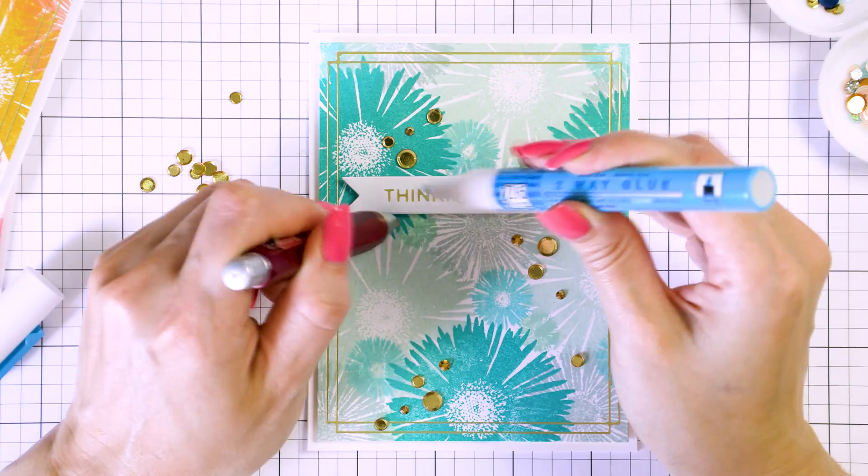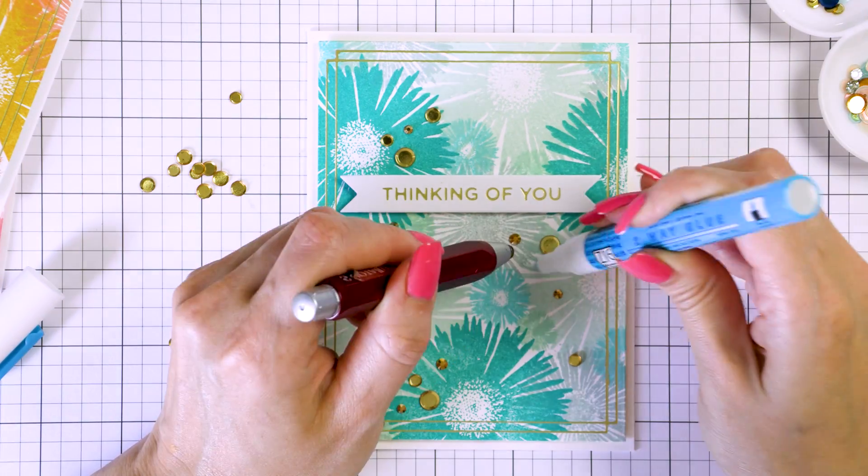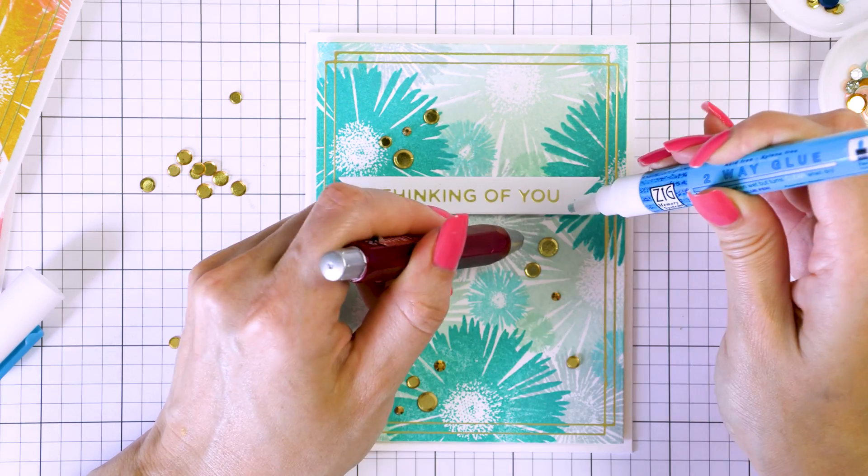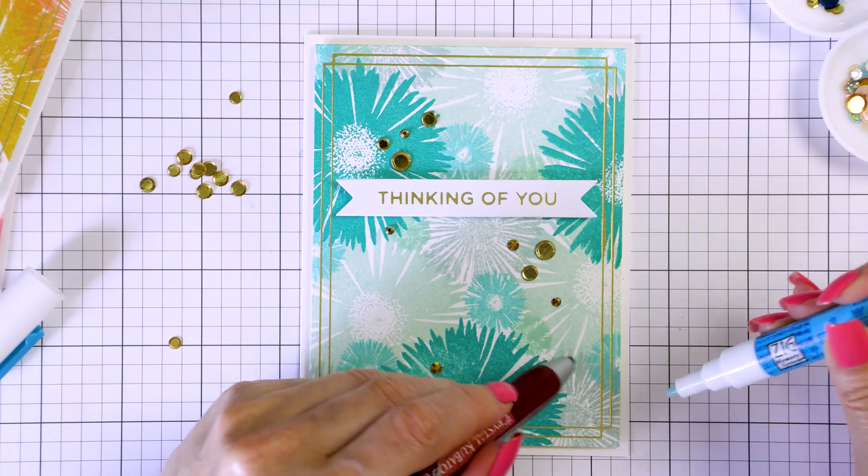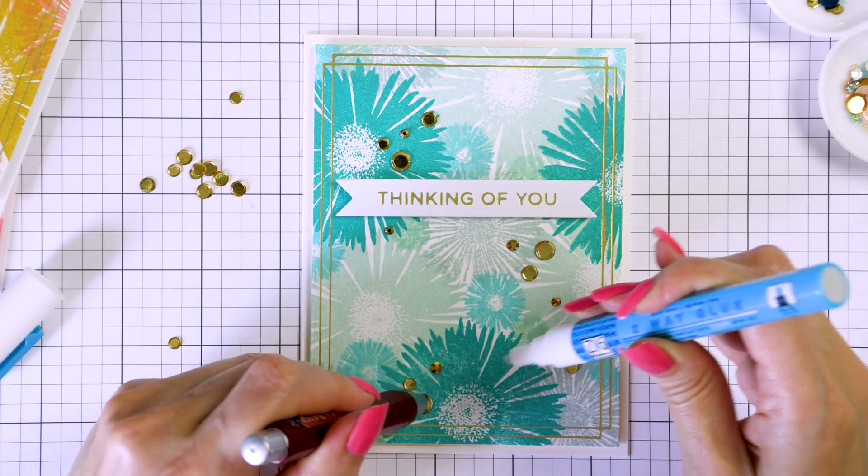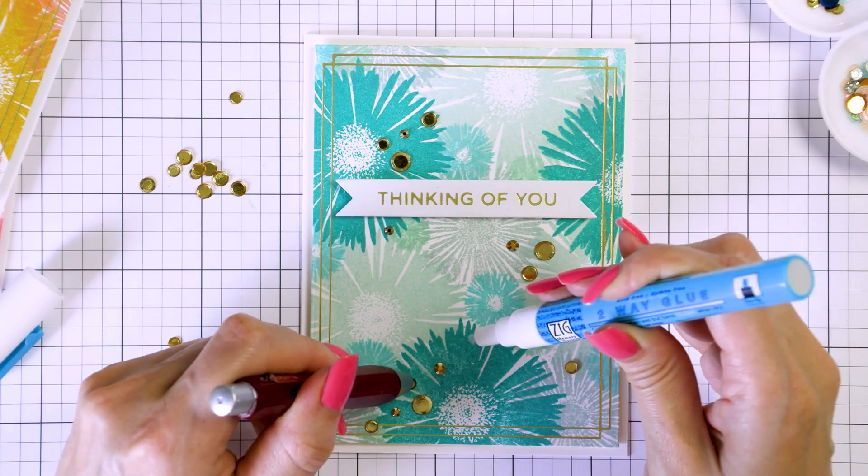Lastly, my cards would not be complete without some sequins. I'm using gold sequins from Simon Says Stamp and I'm scattering them around the panel with the help of a Zig two-way glue pen and my crystal katana pickup tool. And my cards are done.